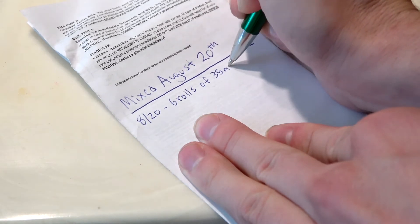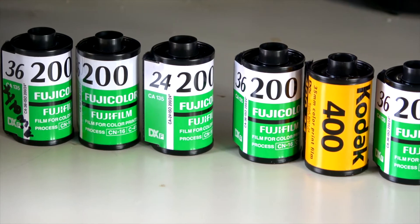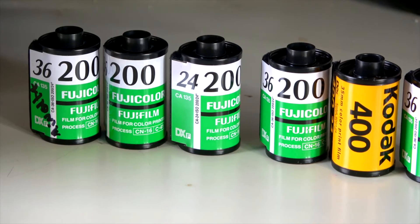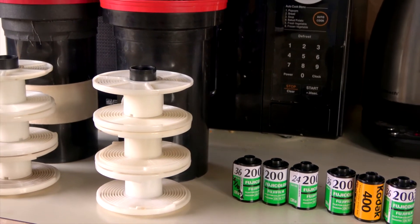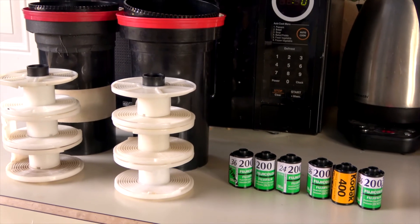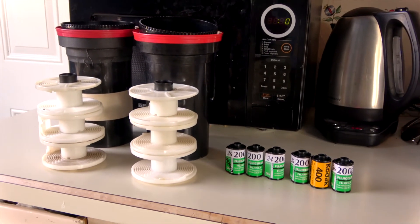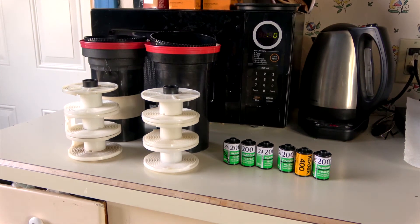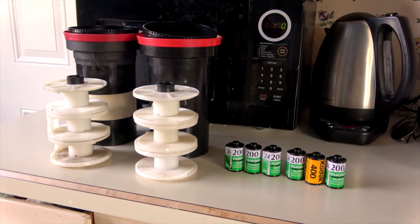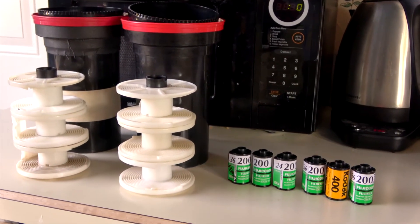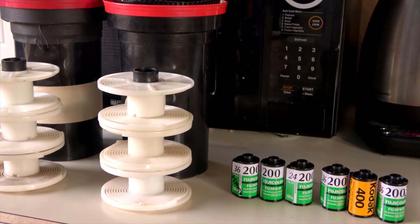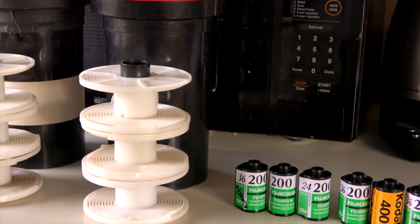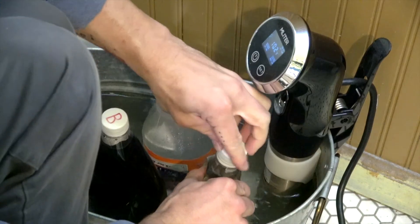Today I'm developing six rolls of 35 millimeter film in the Patterson three-reel tank. You can see my previous video on how to develop black and white film at home to get an idea of all the equipment that you'll need and what the steps are for developing film your first time. If you can develop black and white film, you can develop color film and vice versa.